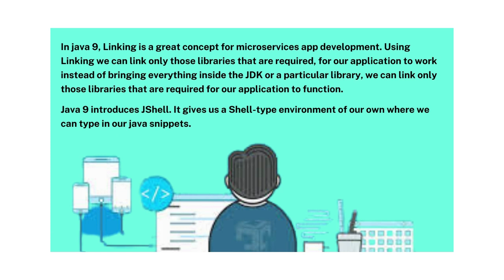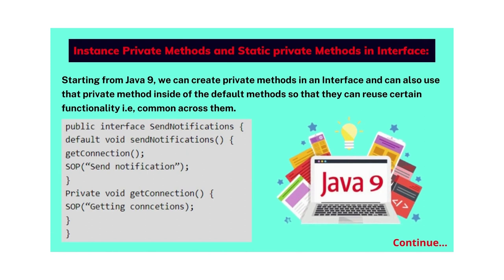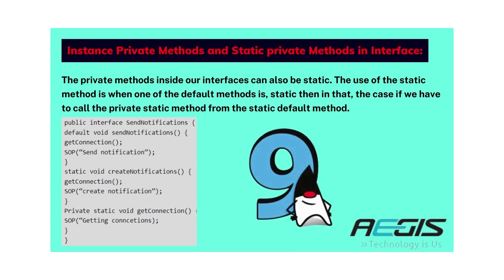Java 9 also introduces JShell, which gives us a shell-type environment where we can type Java snippets. The first feature of Java 9 is instance private methods and static private methods in interfaces. Starting from Java 9, we can create private methods in an interface and use them inside default methods so that they can reuse common functionality. The private methods inside interfaces can also be static — used when a static default method needs to call a private static method.